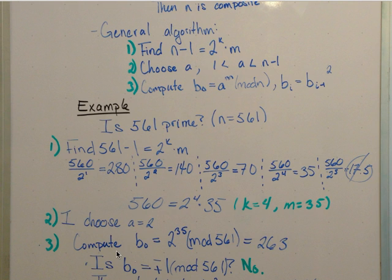Next, I wanted to compute b0 equals 2, which is my a, to the 35, my m, mod 561, mod n, and I get that it equals 263. Now, what I'm looking for in this step 3 is I want to get it equal to plus or minus 1. Is b0 plus or minus 1 mod 561? No, it's not. So therefore, I have to move on to the next b.